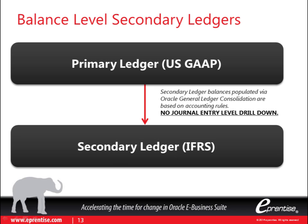One of the things an advanced-level secondary ledger can help you do is map the U.S. GAAP balances to an IFRS secondary ledger. In this instance, because leases are typically accounted for differently under IFRS, this will actually allow you to transform your capital lease balances and expenses related to them — interest if it's a capital lease, or operating lease costs if it's considered operating for U.S. GAAP and capital for IFRS — and transform those amounts to IFRS by using a balanced-level secondary ledger.